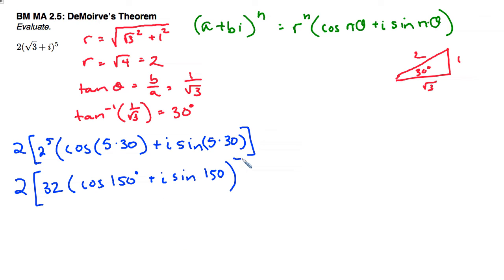Now, to actually evaluate this, I'm multiplying the 2, that gives me 64. Cosine of 150, well, this is a multiple of 30. So I can do the cosine of my special angle, 30 degrees, which is square root of 3 over 2.